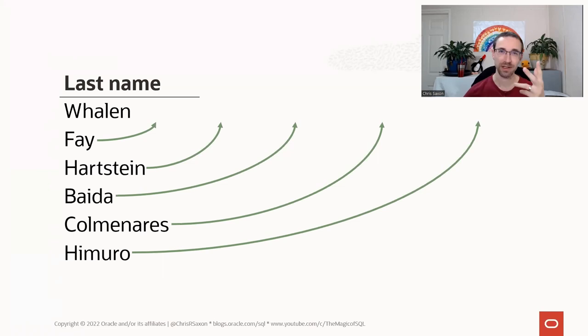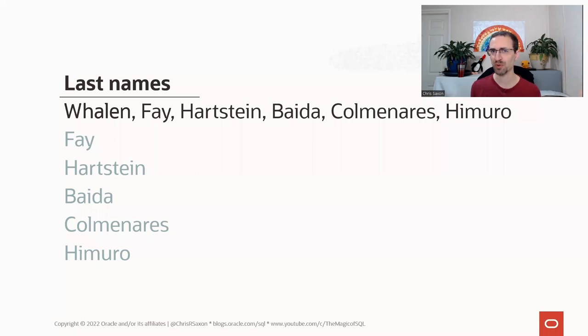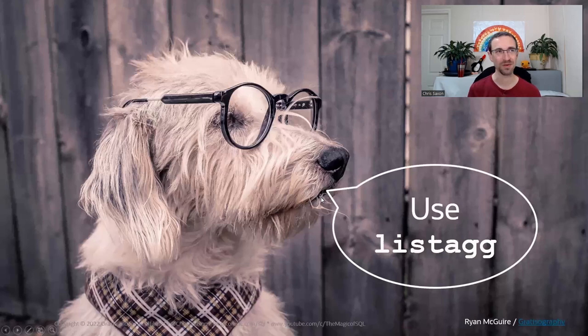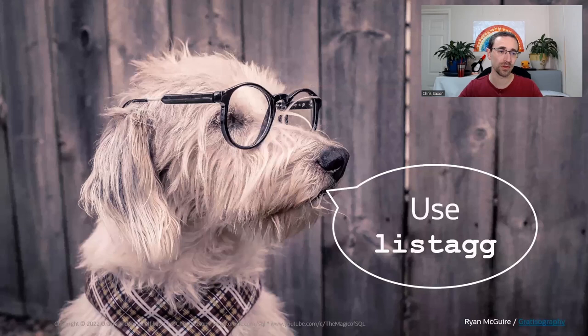So instead of all these individual rows, what we want to do is effectively squish them together into one row. And this isn't a pivot — we're not going to create a separate column for each one. What we'll do is just concatenate them all into one big string, probably comma separated, could be separated by anything you want. Back in 11.2, which is about 13 years ago now, we introduced LISTAGG — an inbuilt function in the database to combine rows into comma-separated or whatever-separated values.